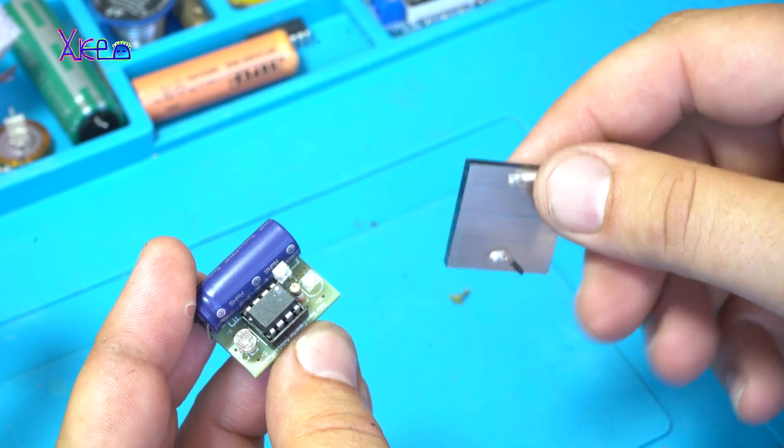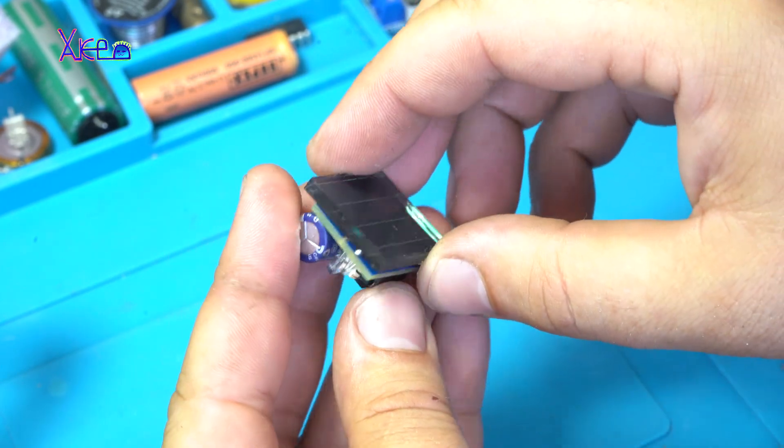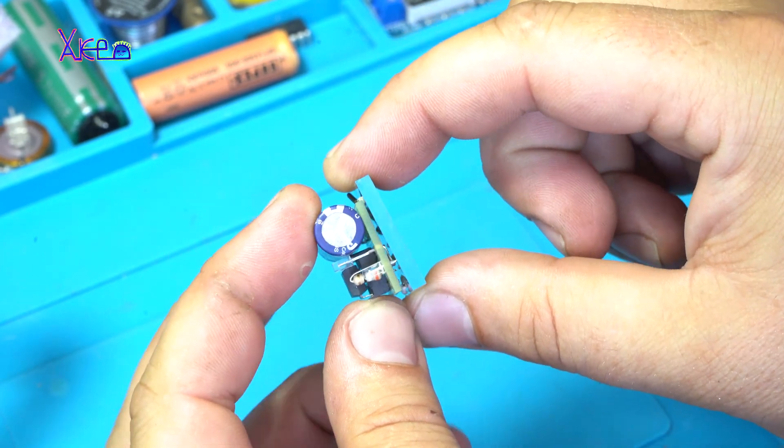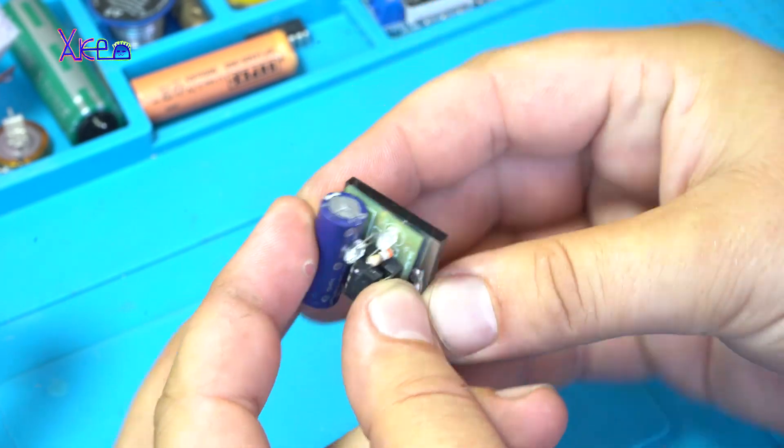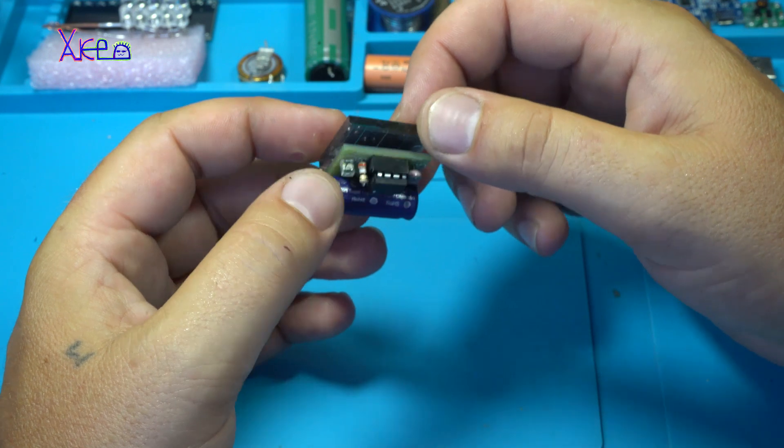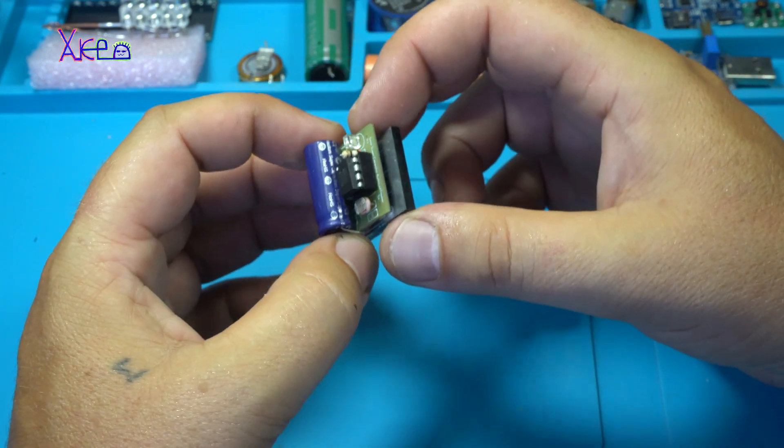And not to forget the small solar panel with rectifier diode for protection. And that solar panel is giving around 2.5 volts which is enough for charging the supercapacitor.